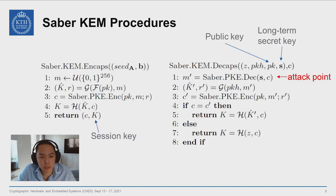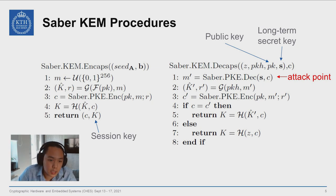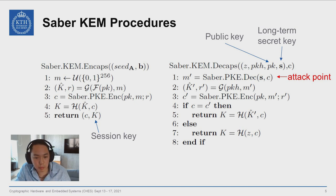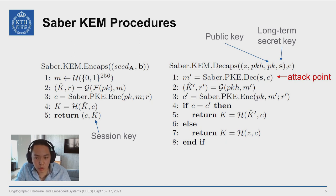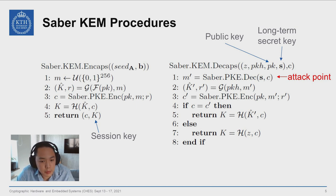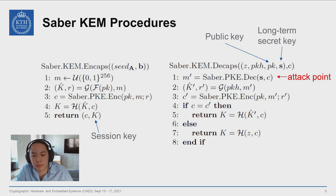Here we see a portion of the SABER key encapsulation mechanism that we are focusing on. K is the session or ephemeral key, whereas S is the long-term secret key. Our presented message recovery retrieves the message from which we can derive the ephemeral key directly, but we will go one step further by combining it with a chosen ciphertext attack to derive the long-term secret key. Our attack point, marked in red, is in the SABER PKE decryption function, line one, of the KEM decapsulation algorithm.